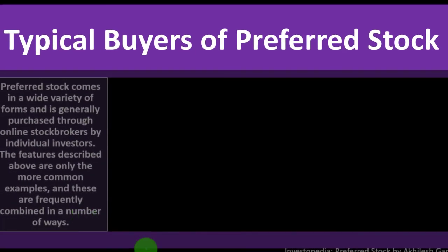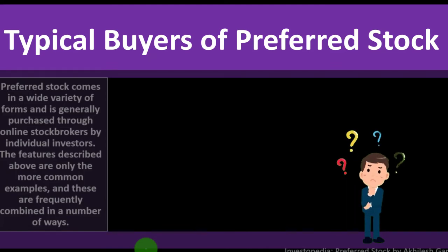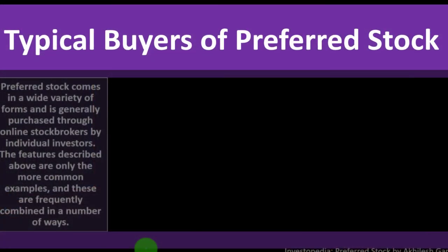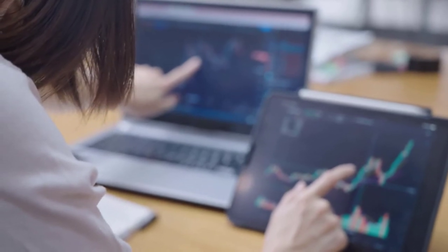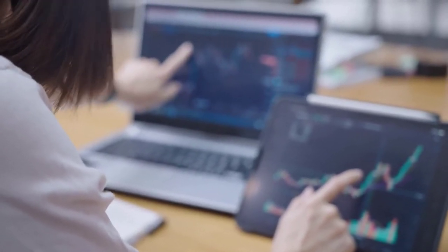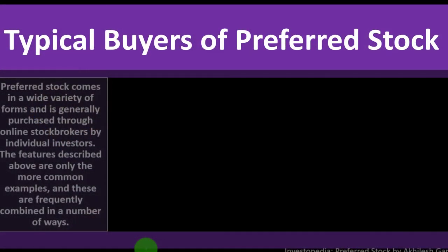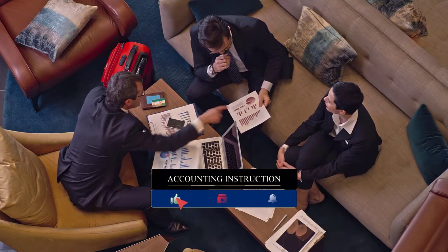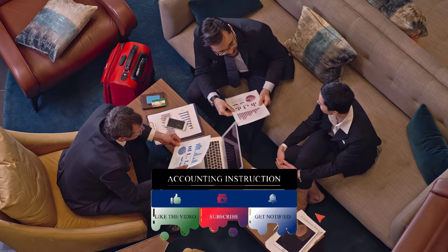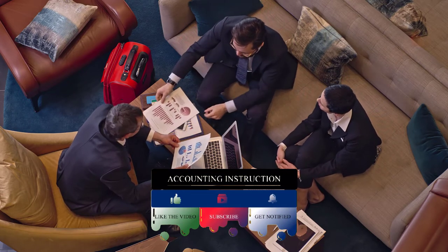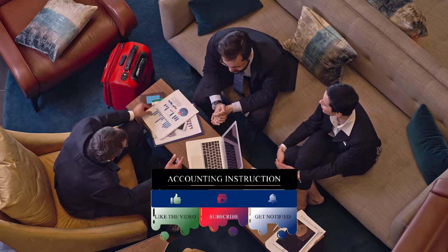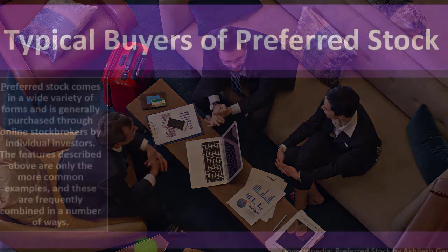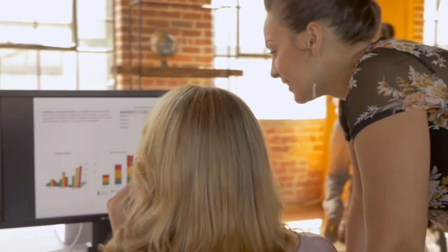Who buys preferred stock? Most individual investors typically think of common stock when investing in equities and bonds when investing in fixed income. Preferred stock isn't that complicated at first glance, but a couple of layers of complexity actually add quite a lot of complexity to the investment instrument. Simplicity is often what investors want — common stocks are simple and comparable, bonds are similar — but adding convertible features and other conditions makes fitting preferred stock into a portfolio trickier than it first appears.